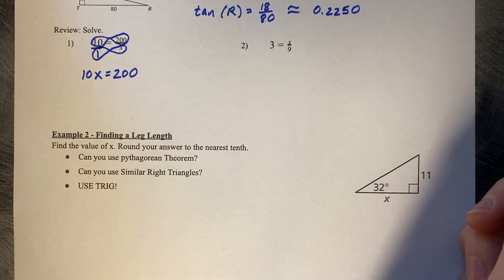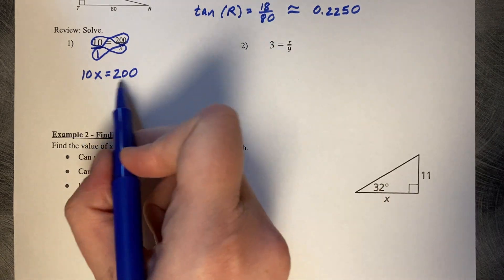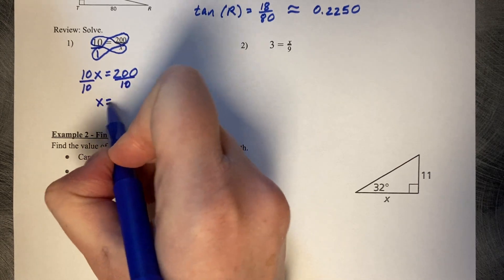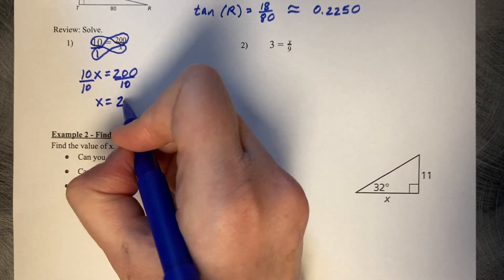Now we just have a regular equation. Divide by 10. 200 divided by 10 is 20.